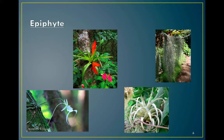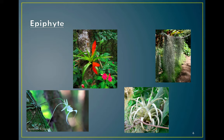An epiphyte is a plant that uses another plant for physical support, obtaining water from the air and nutrients from organic debris that collect among their leaves. Four examples: the ghost orchid, which is endemic to Florida swamps, very rare, blooms very briefly, and is so endangered that people enter the swamp during blooming to steal them; a bromeliad; an air plant; and Spanish moss, which is also an epiphyte.